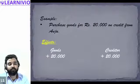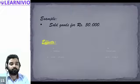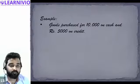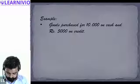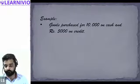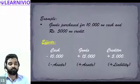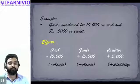When we purchase goods for 20,000 on credit from Anju, goods increase by 20,000 and creditor also increases by 20,000. Another example: goods purchased for 10,000 on cash and 5,000 on credit — goods increase by 15,000, cash decreases by 10,000, and creditor increases by 5,000. This shows three effects. The dual aspect concept says at least two effects — there can be more.